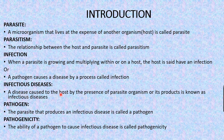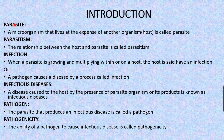If you have symptoms resulting from this infection, then we call it a disease. An infectious disease is a disease caused to the host by the presence of a parasitic organism or its products — such as toxins. The parasite that produces infectious disease is called a pathogen, and the ability of a pathogen to cause infectious disease is called pathogenicity.